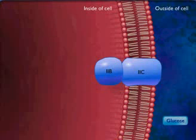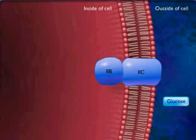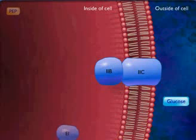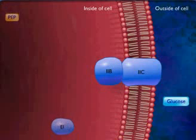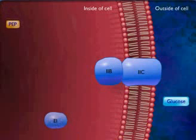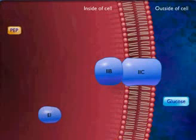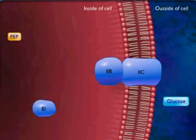Group translocation is a process in which an organic molecule such as glucose is transported into the cell while being chemically modified. The PEP phosphotransferase system is an example of group translocation.